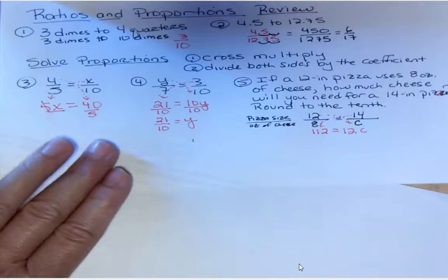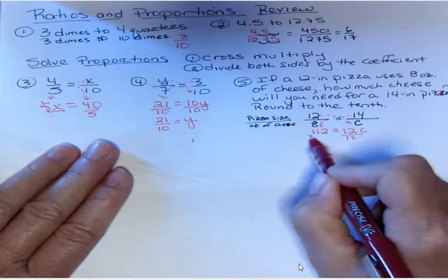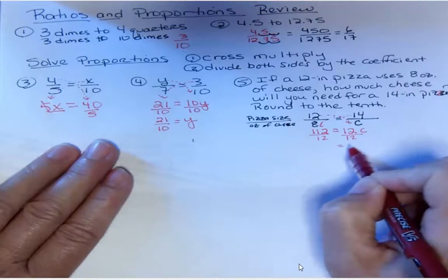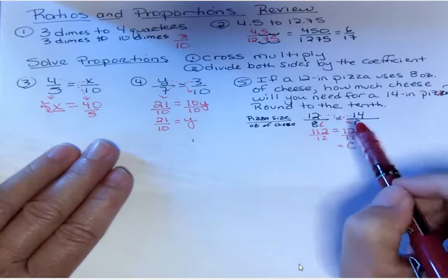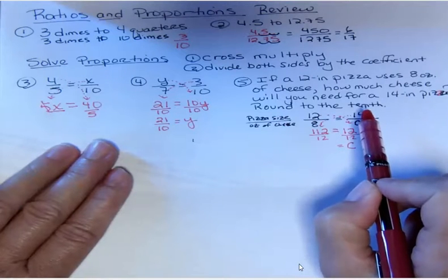What's the coefficient in this problem? The coefficient is 12, so I'm gonna divide both sides by 12. In this case, it says round to the tenth, so it's telling me they want a decimal and they want it rounded to the tenth.